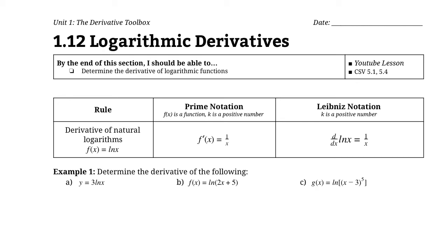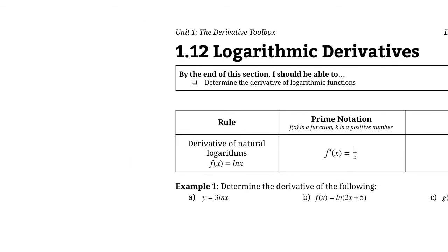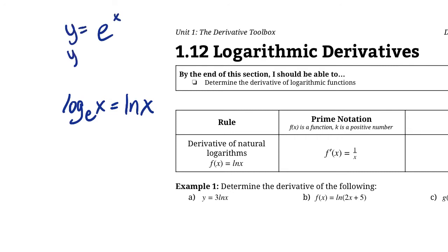Let's take the derivative of logarithmic functions. Start off with the simple one: the derivative of ln x. Recall, ln x is just a log with base e. e is a special number. We've already seen that when we looked at the derivative of e to the x — if y equals e to the x, y prime, the derivative of that, is also e to the x.